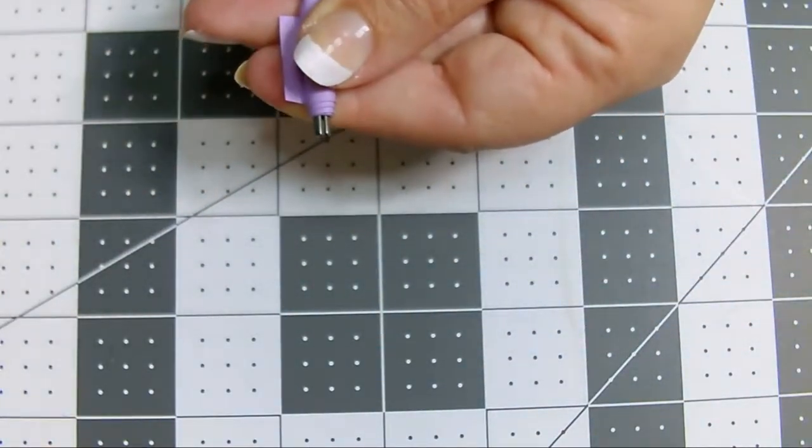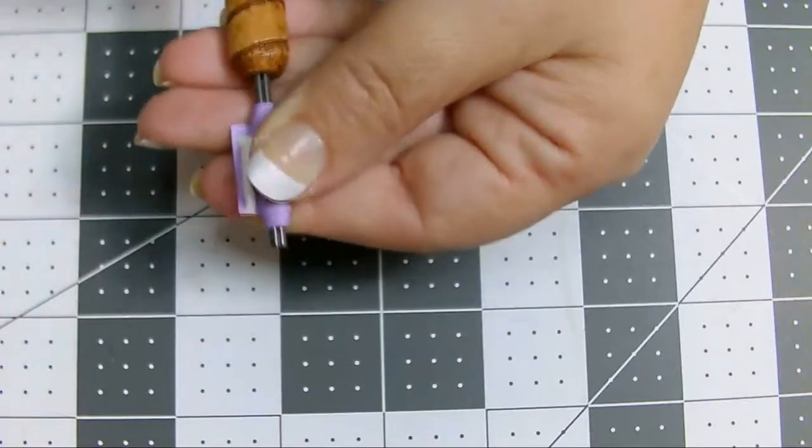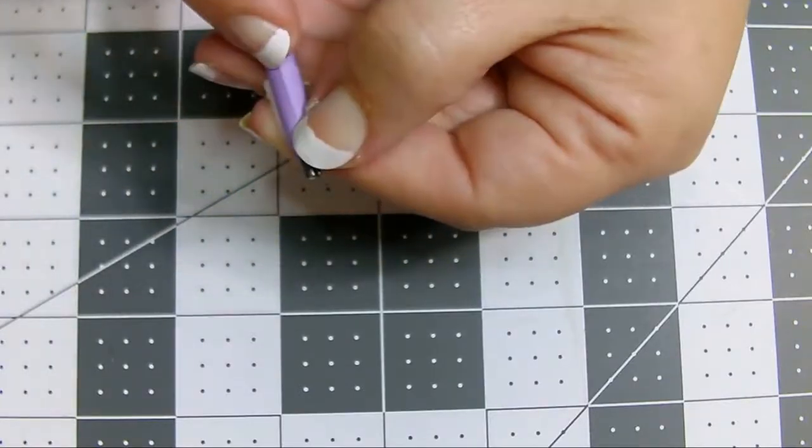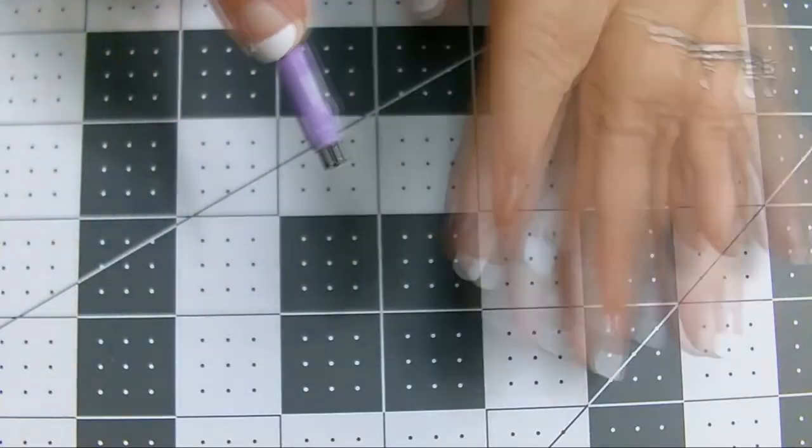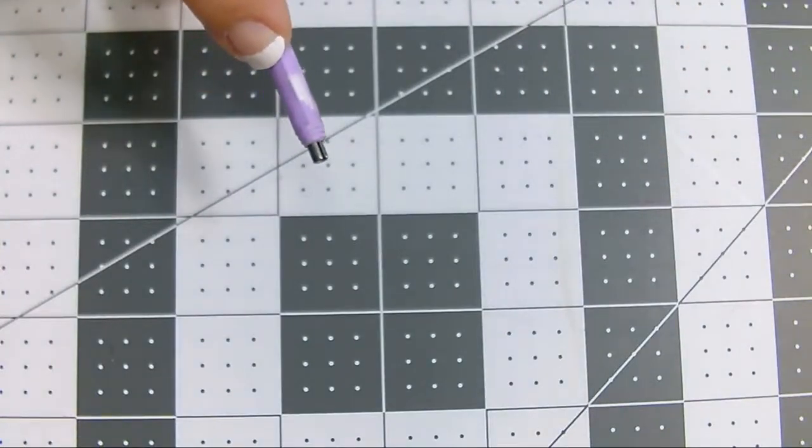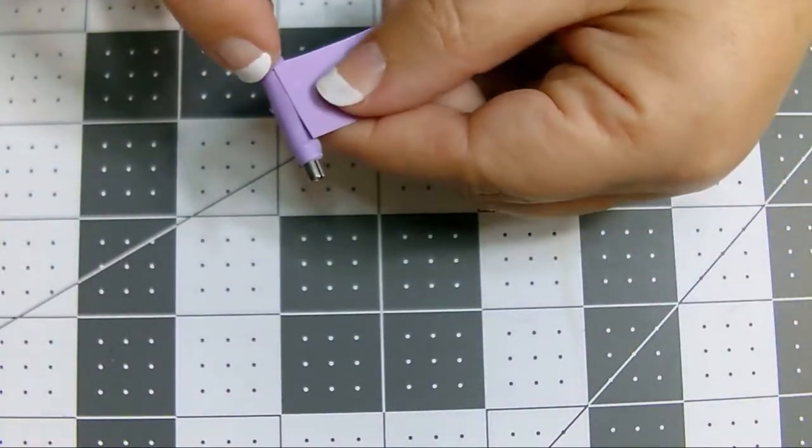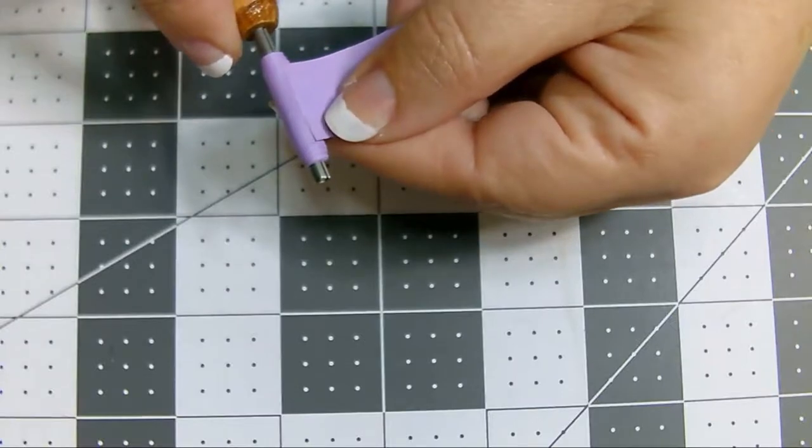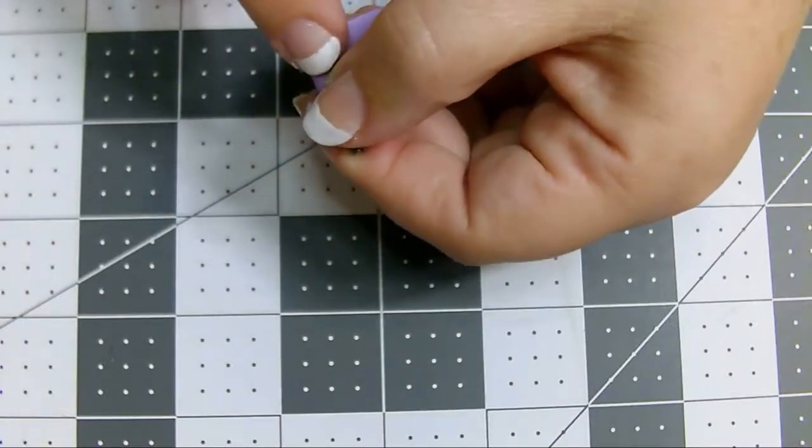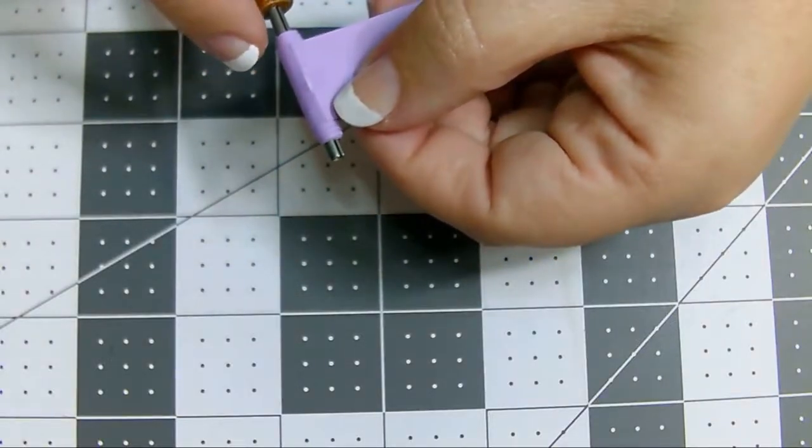Glue the end as normal. Make sure the strip is firmly in place. If there's any extra glue, I like to spread it around because next we're going to apply strip B right at the point where strip A ends. I like to leave strip A in place for a few seconds before I start rolling to let the glue get tacky.